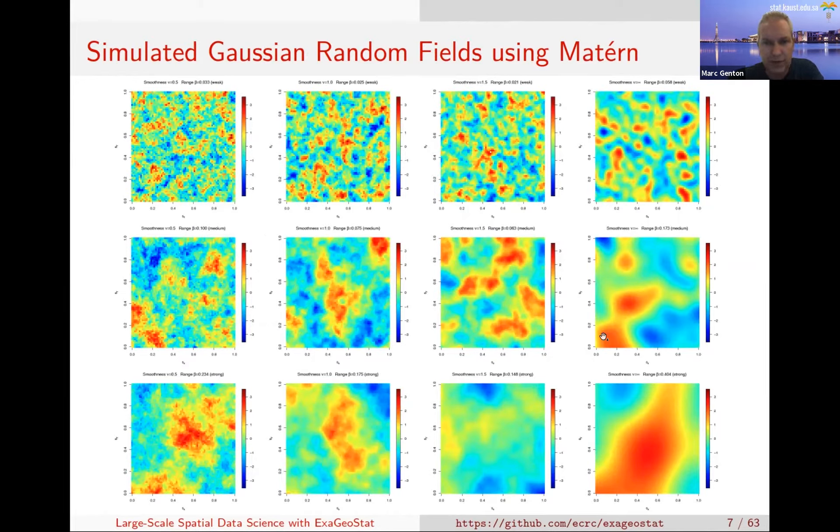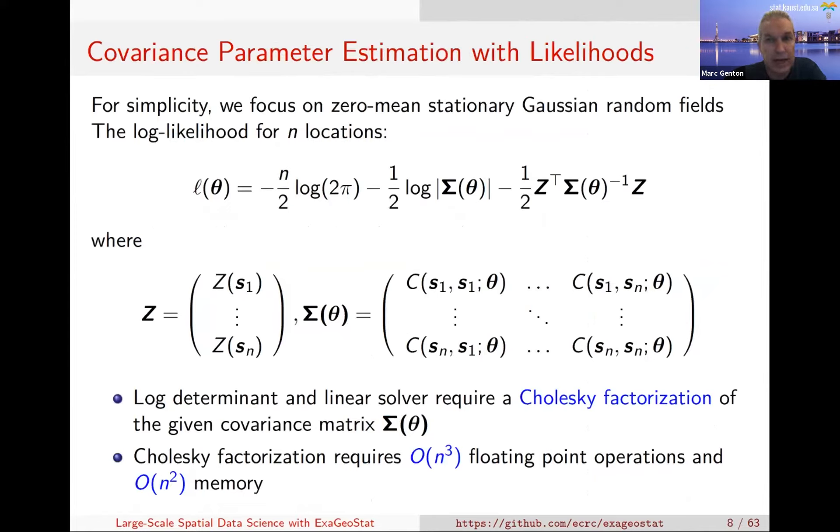Here you have a realization of Gaussian field with that Matern model. The first row is exponential, and the last row is for Gaussian when nu is infinity. When you move from left to right, the realization becomes smoother and smoother. When you move from one row to the other, this is weak dependence, medium, and strong dependence. If you're in a red region, you stay red for quite some time in space. What we want to do is, from data that come as realization from such field, we want to estimate the parameters.